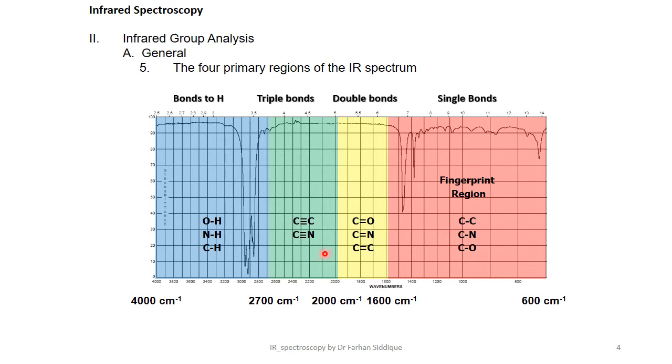Then there is a triple bond region in which we have triple bonds like C≡C and C≡N till 2700 cm⁻¹. Then the last region is known as the hydrogen bonding region in which hydrogen bonds with oxygen, nitrogen or carbon, and it is up to 4000 cm⁻¹.